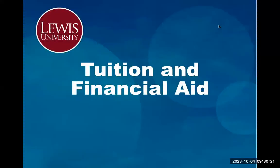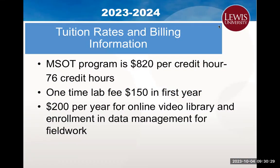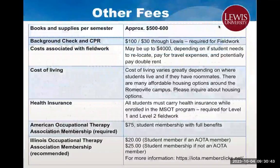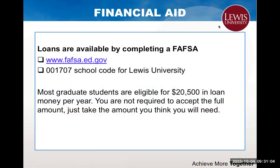Let's talk about tuition and financial aid. Our tuition rates are listed here along with additional fees for labs and databases used throughout the program. Here are additional items and fees for the program to consider — these items are not included in your tuition. Students have the ability to apply for financial aid, and if you are planning to, listed here is the website and Lewis University's code to use on your application.